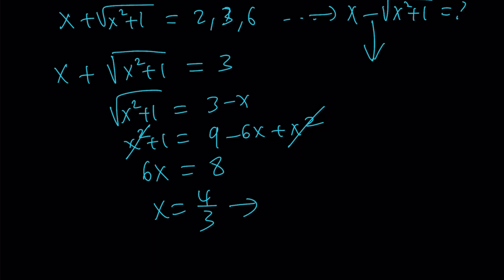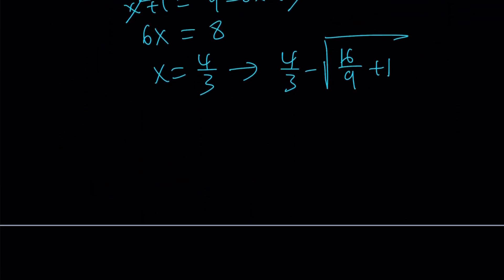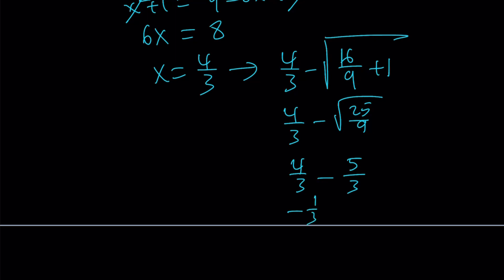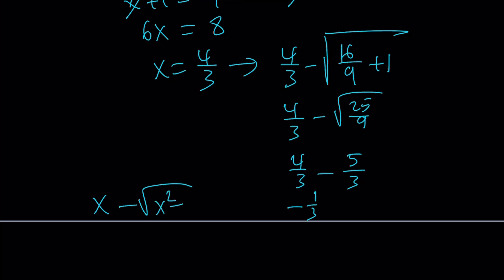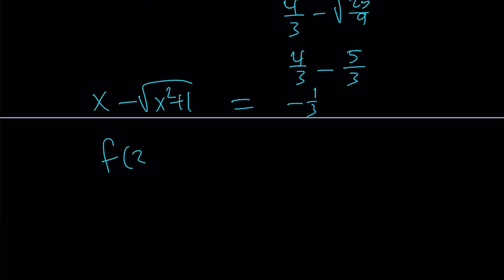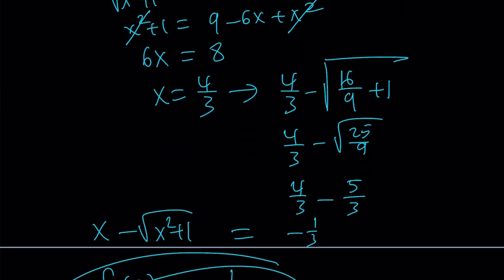Plugging x equals 4 thirds into x minus the square root of x squared plus 1 gives us 4 thirds minus the square root of 16 over 9 plus 1. Before we had 9 over 16; now we have 16 over 9 — interesting. That's going to be 25 over 9, so the square root is 5 thirds, and their difference is negative 1 third. Therefore, f of 3 is equal to negative 1 third.